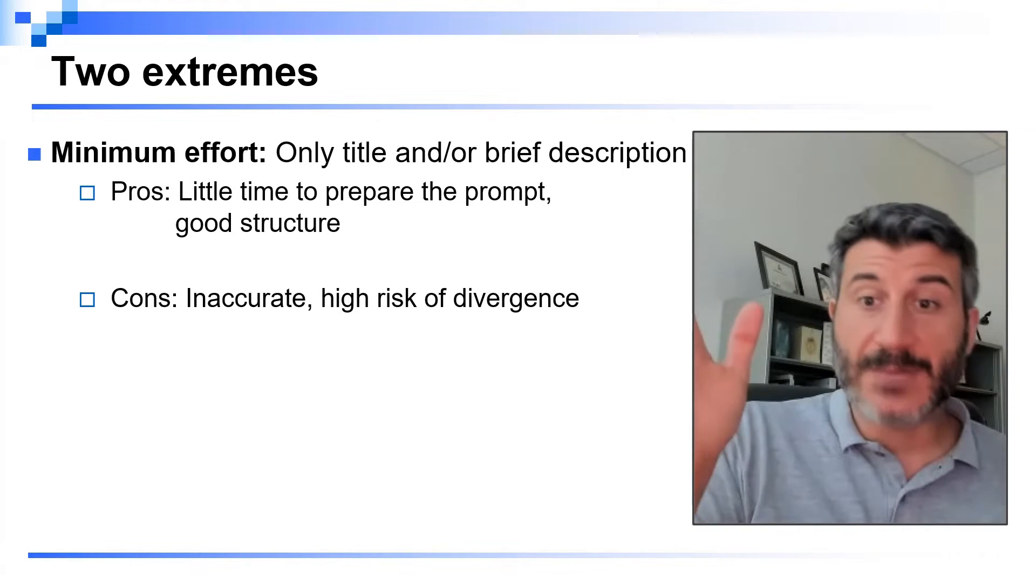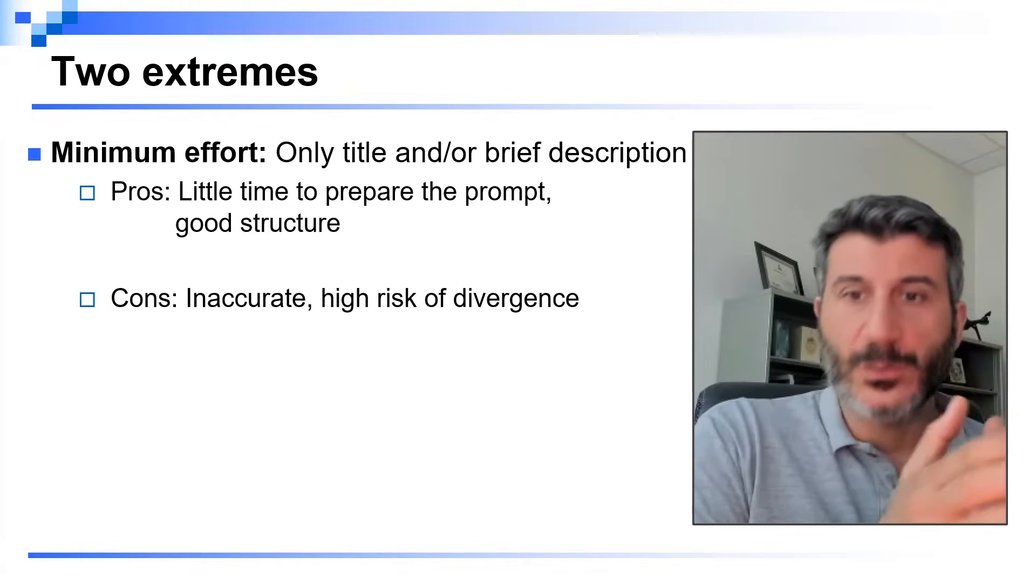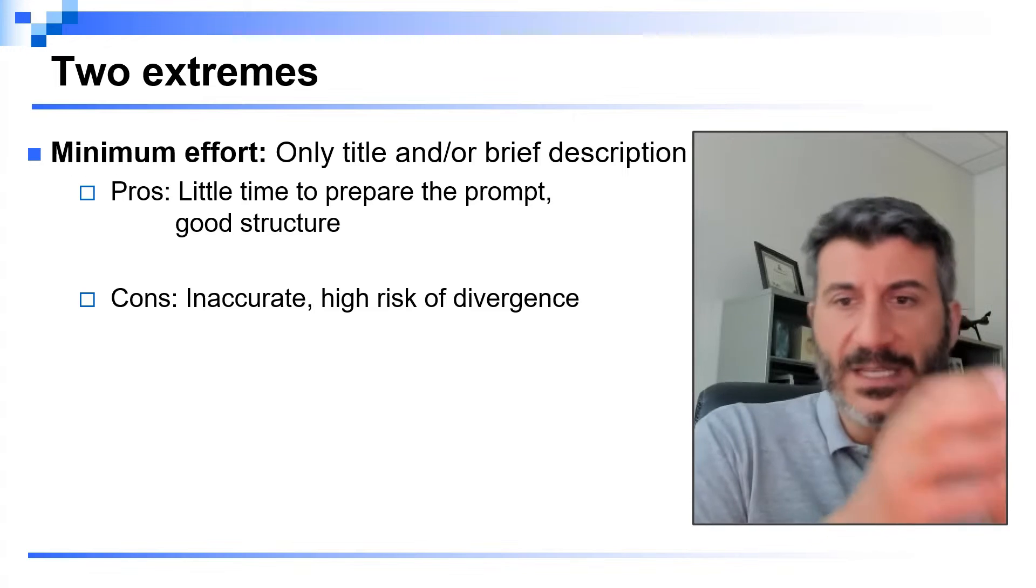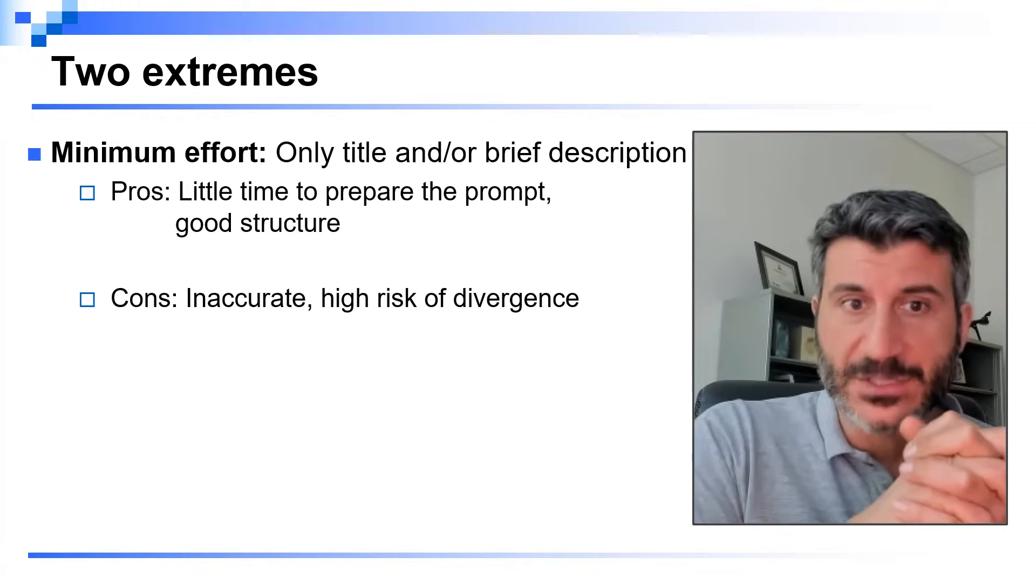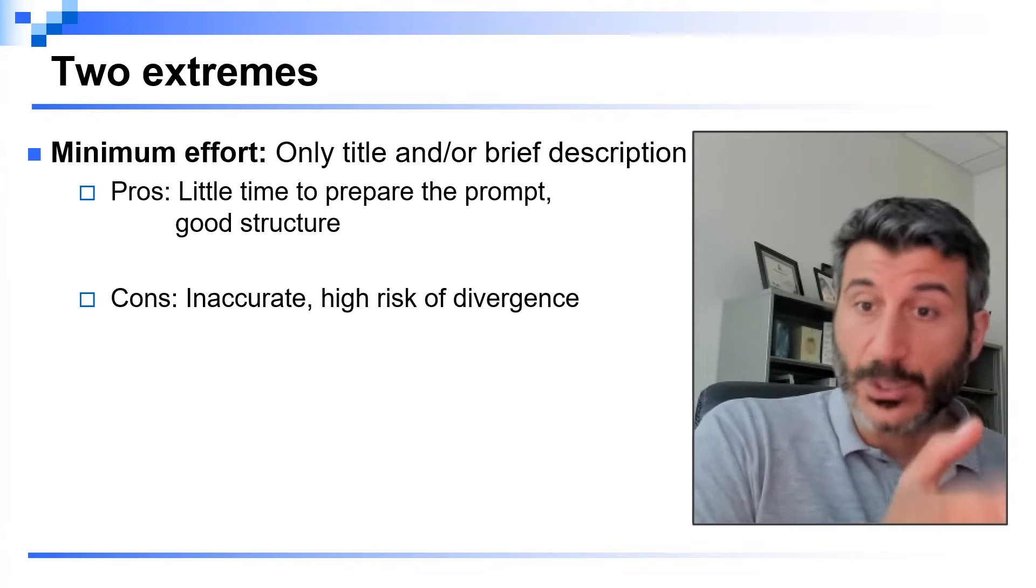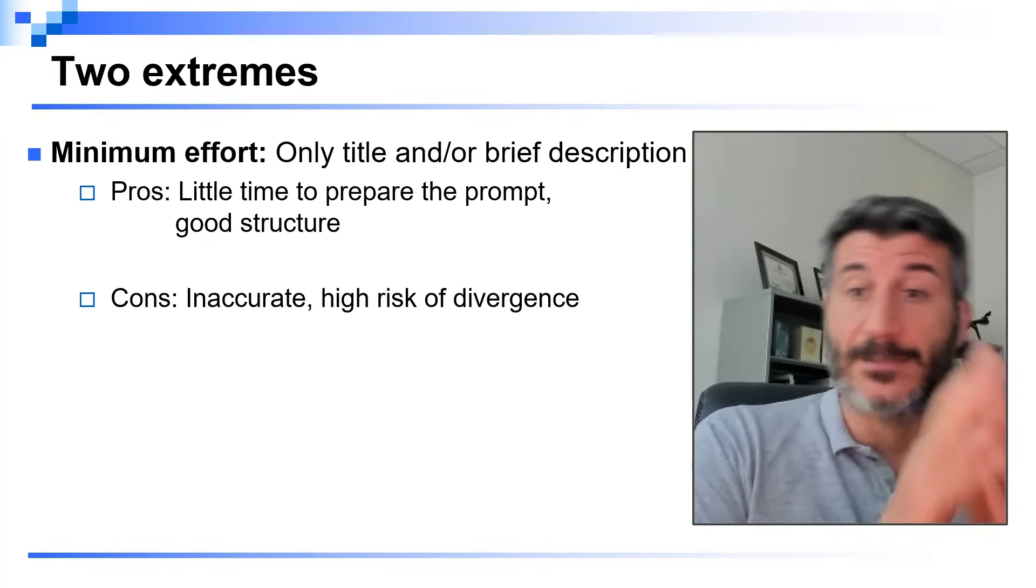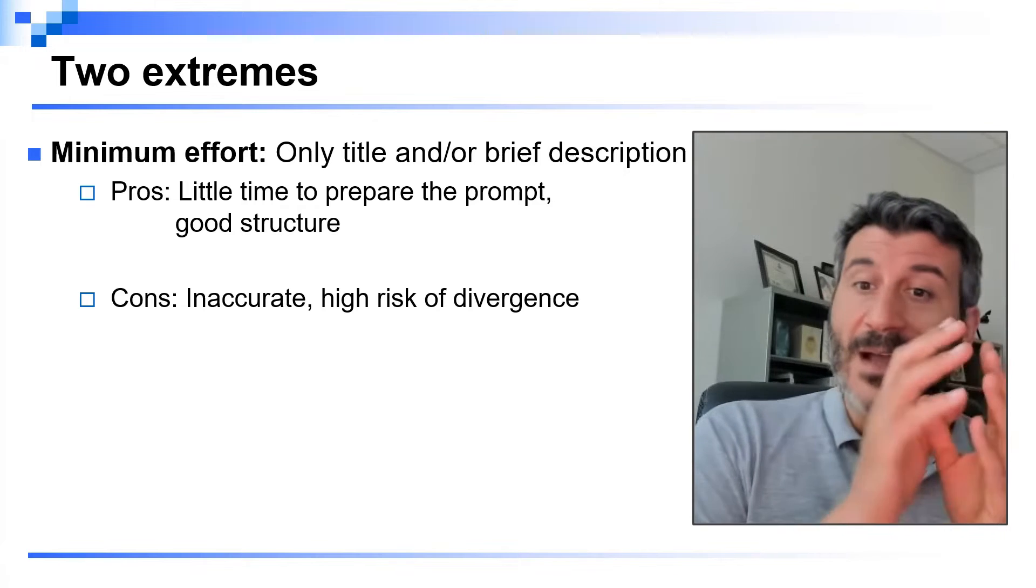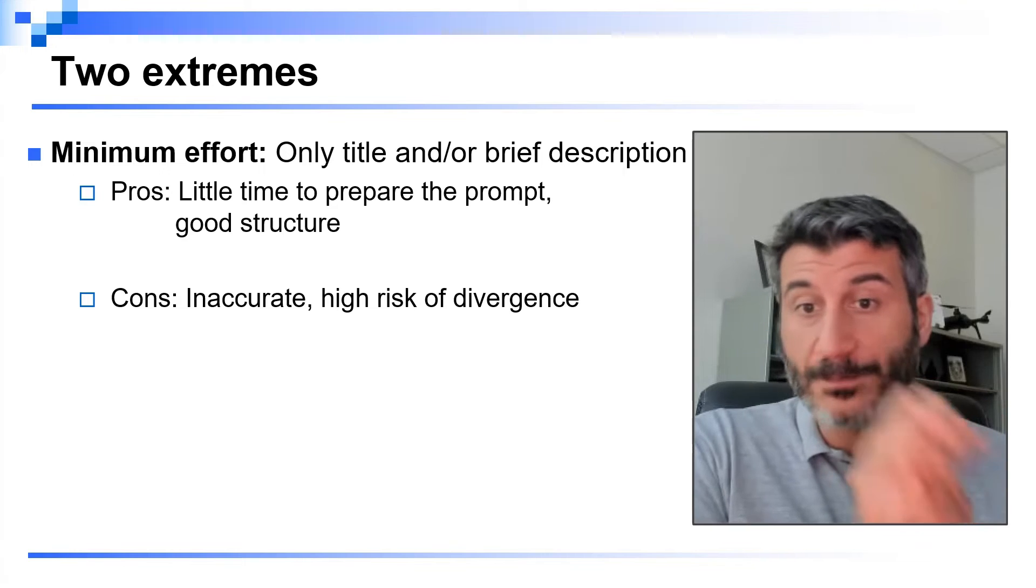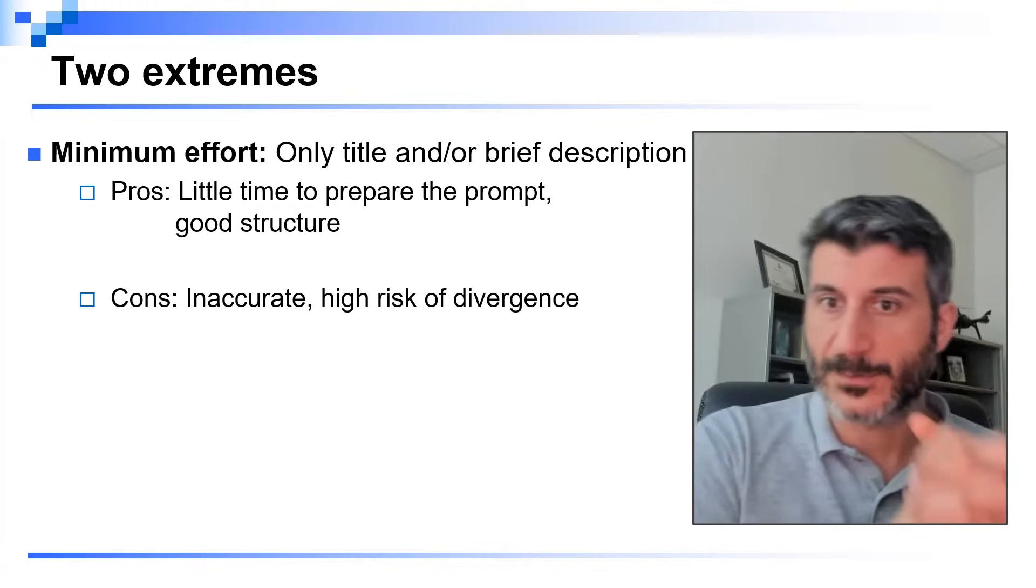We can identify two extreme approaches in designing the prompt. The first one is the minimalist approach, in which we just provide ChatGPT with the title of the paper or a very brief description, and then ask ChatGPT to design the abstract. The advantage here is clearly it took really little time in order to design the prompt, and ChatGPT most likely is going to provide you a good structure. However, most likely the content is going to be inaccurate and not reflect the actual content of your paper, since ChatGPT most likely is going to diverge in directions that are not reflective of what you're actually proposing.